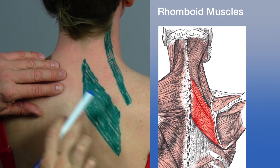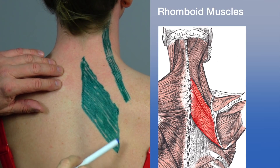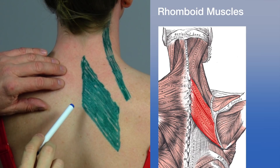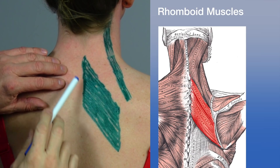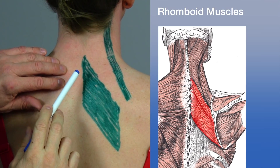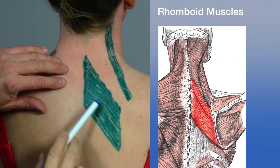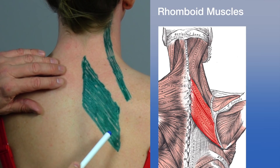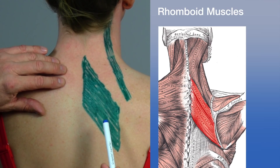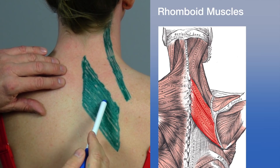The next muscle is the rhomboid major and minor — named for the rhomboid shape of the muscle. The rhomboids originate from the spinous processes of C7 and T1 to T4, and insert on the medial border of the scapula. Their action is adduction of the scapula and downward rotation when the scapula is fixed.